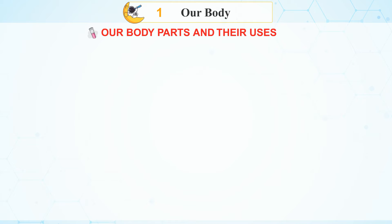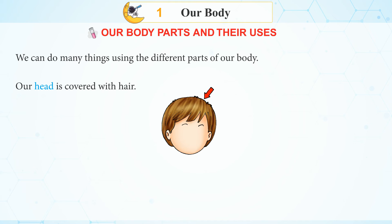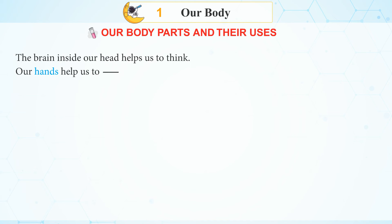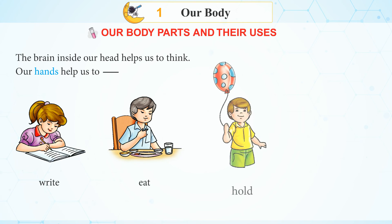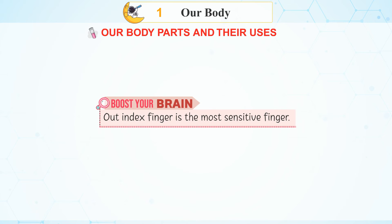Our Body Parts and Their Uses. We can do so many things using the different parts of our body. Our head is covered with hair. The brain inside our head helps us to think. Our hands help us to write, eat, hold, and carry. Boost your brain: Our index finger is the most sensitive finger.